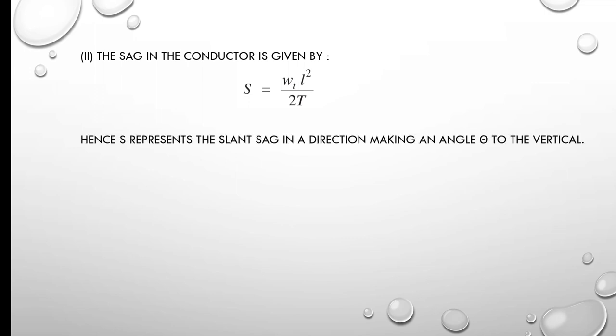With this formula, we can calculate the sag in the conductor: S = WtL²/2T. Here S represents the slant sag in a direction making an angle θ to the vertical. The vertical sag is S cos θ.